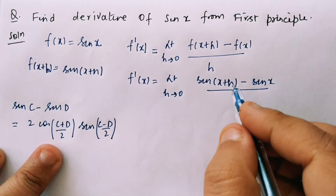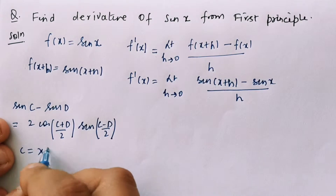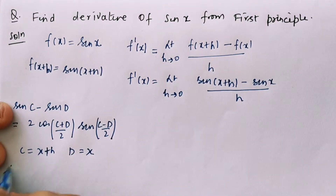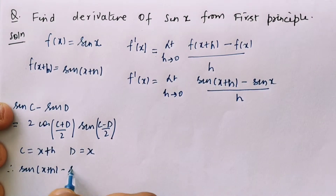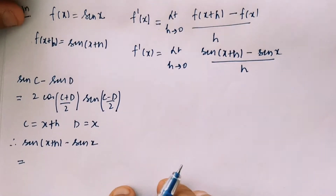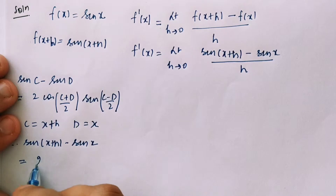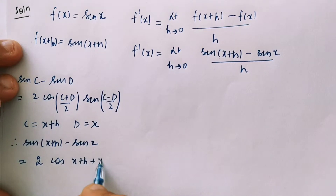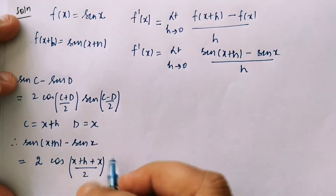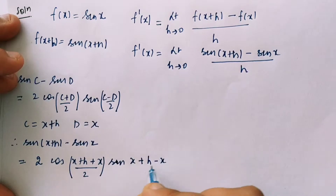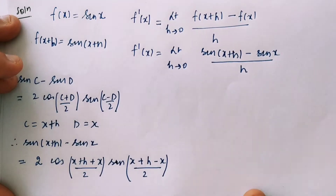So my C and D are: C is x+h and D is x. I will apply this. Therefore, sin(x+h) minus sin x will become sin C minus sin D, which gives 2 cos((C+D)/2). That means cos((x+h+x)/2), written in angle form. Then sin((C-D)/2), that is sin((x+h-x)/2).